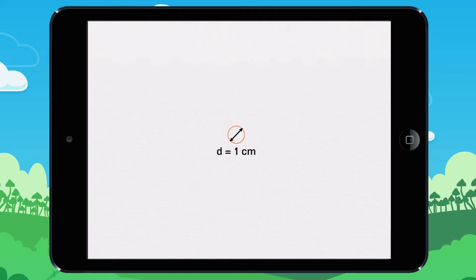Here is a circle whose diameter is one centimeter, and a number line in centimeters. Imagine that the circle is a wheel. We want to measure one turn of the wheel.